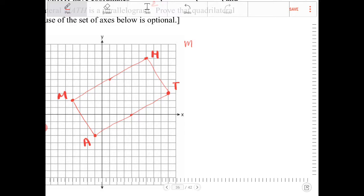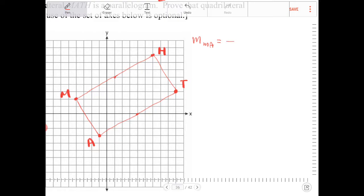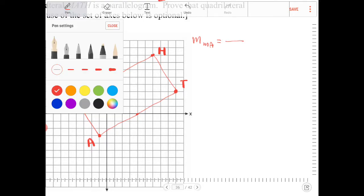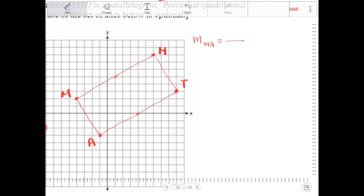So let's find the slope of all four sides. So the slope of MA, and all you got to do is just count, because you have it already drawn, right? So I'm going to do just that. So from M to A, we're going to go down, I'm going to use another color here. We're going to go down five and over three, right? So that's going to be negative five-thirds.